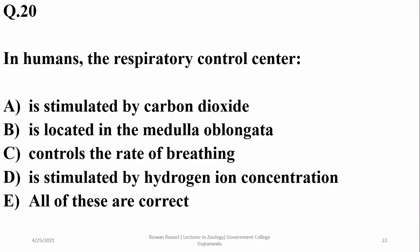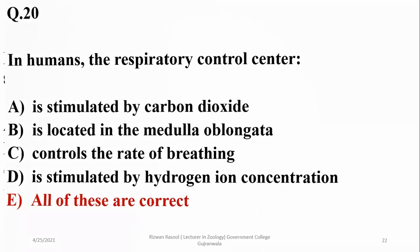Question nineteen: in humans the respiratory control center, which is stimulated by CO2 gas, is located in the medulla. It controls the rate of breathing and is also stimulated by hydrogen ion concentration. All of these are correct statements about the control center present in the medulla.